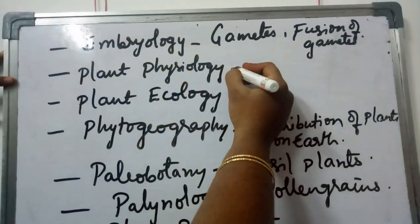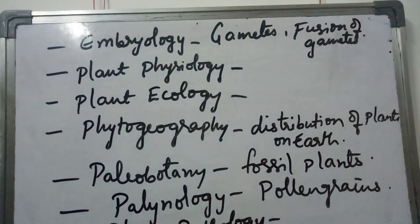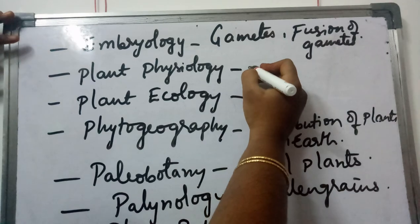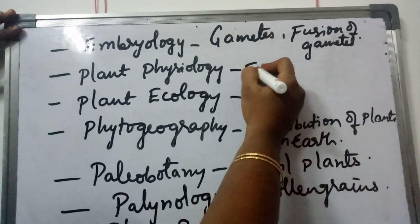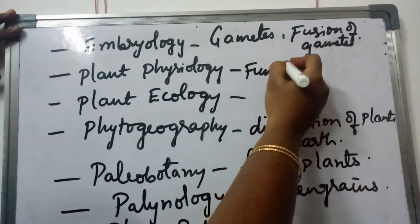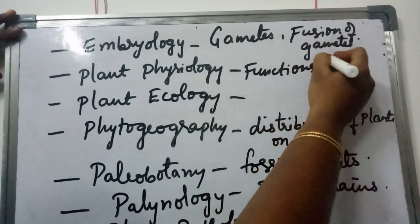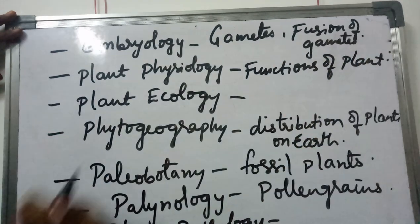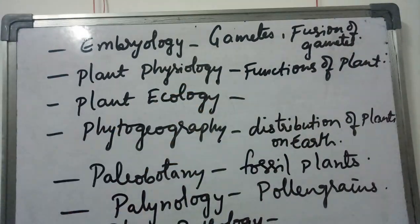Plant physiology is a branch of botany that deals with all the functions and metabolic activities of a plant body. That comes under plant physiology.